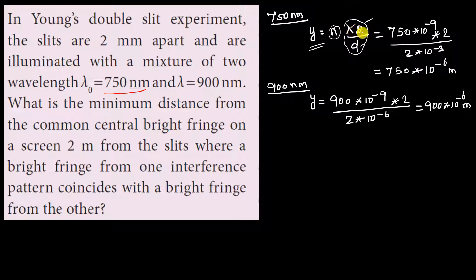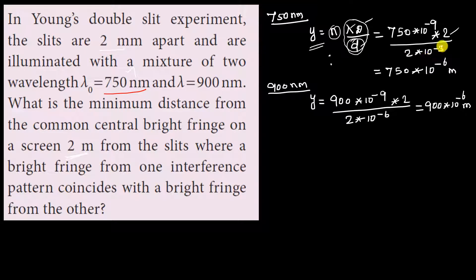Using y = n·λD/d with lambda equal to 750 nm, that is 750 into 10 to the power of minus 9, D equals 2 meters, and d equals 2 mm which is 2 into 10 to the power of minus 3. The fringe width for 750 nm works out to 750 into 10 to the power of minus 6 meter, which is approximately 750 micrometers.